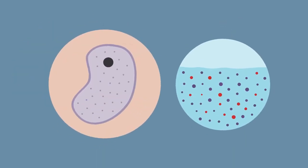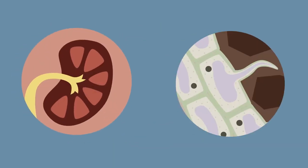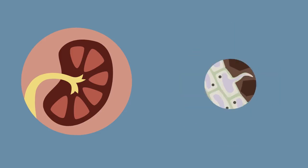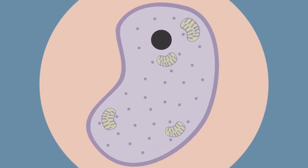Active transport allows cells to absorb substances from very dilute solutions, such as root hair cells taking in mineral ions from the soil and in kidneys, so we can hang on to the substances our body needs such as glucose and sodium ions. Cells which carry out a lot of active transport often have lots of mitochondria to give them the energy they need.